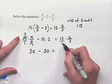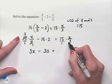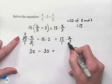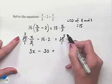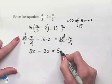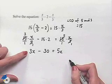3 divides 3 once, 15 divided by 3 is 5, and we come up with 5x. Now we can subtract 3x from both sides of the equation.